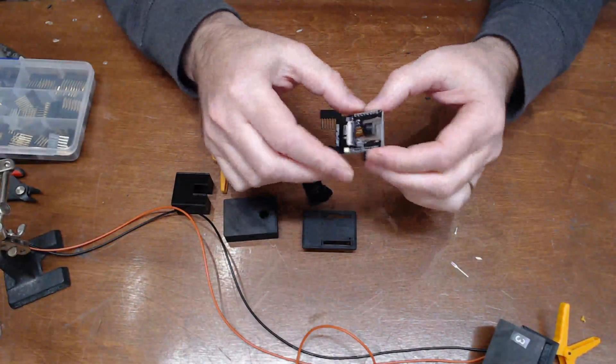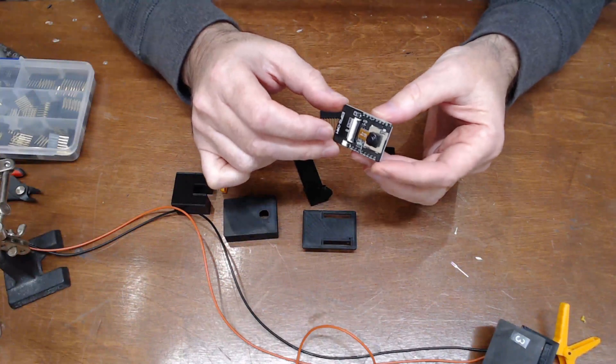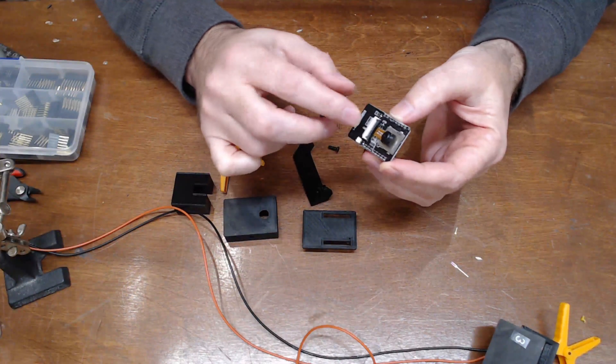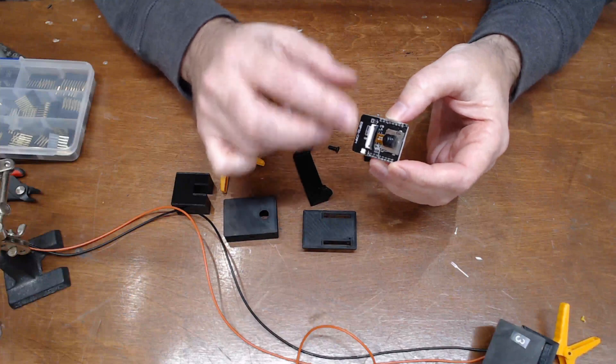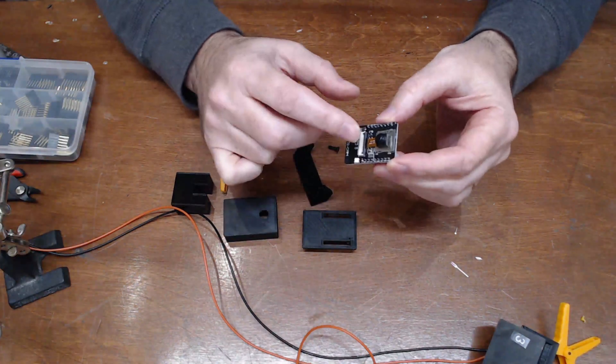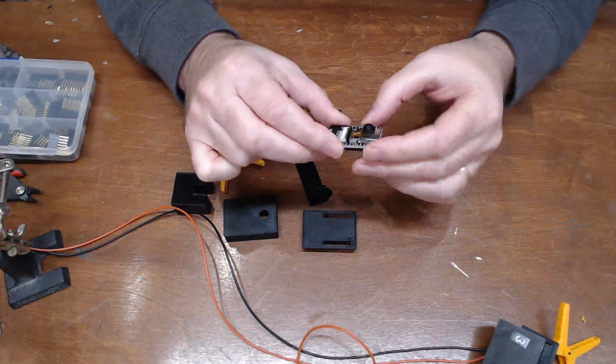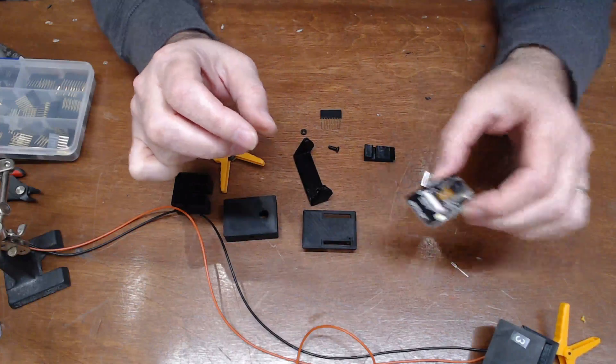This is the ESP32 cam module that you can buy. What I'm trying to achieve is to build a 3D scanner using many of these. I don't know if that's going to work yet because the maximum resolution on these little cameras is 1600 by 1200, so I don't know if that's enough for Meshroom, but time will tell.